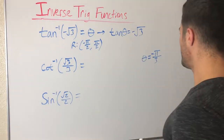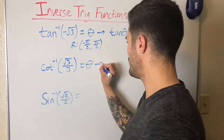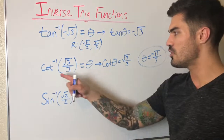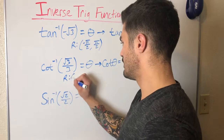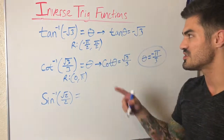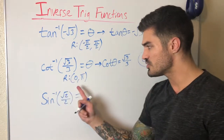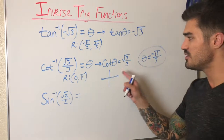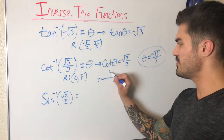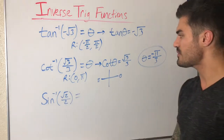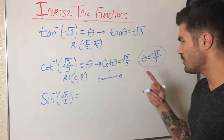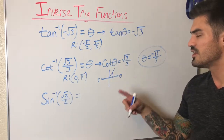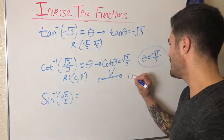For cotangent inverse of root three over three: equals theta, so I rewrite as cotangent theta equals root three over three. I have to remember the range of cotangent inverse, which is zero to pi, not including zero or pi — same as cosine's range but without the endpoints. Since the value is positive and I'm limited to the first and second quadrant, cotangent is positive so we're in the first quadrant. Where is cotangent equal to root three over three? That's at theta equals pi over three. If you're confused, you can rewrite cotangent as cosine over sine.